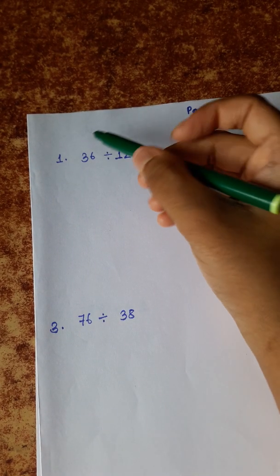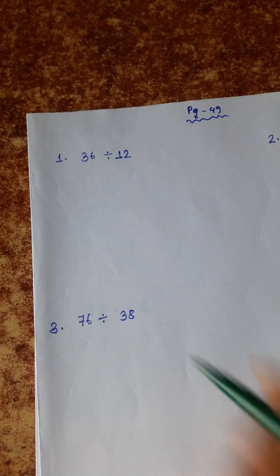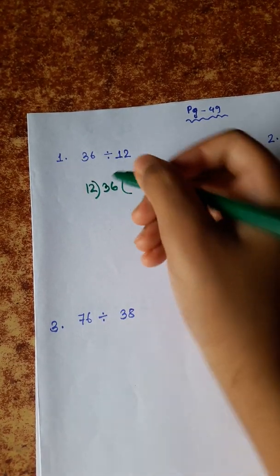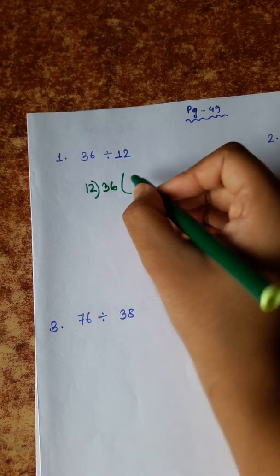Our first division is 36 divided by 12. 12 ones are 12, 12 twos are 24, 12 threes are 36.